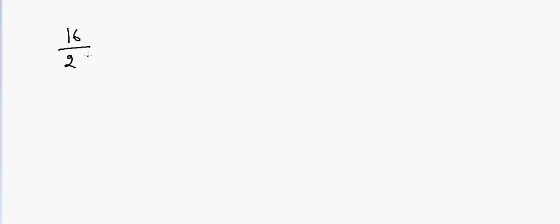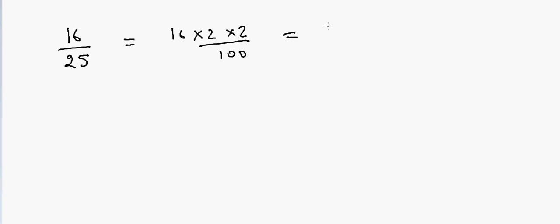In that case I can write it as 16 times 2 times 2 divided by 100. So double of 16 is 32, and double of 32 is 64 — the answer is 0.64.